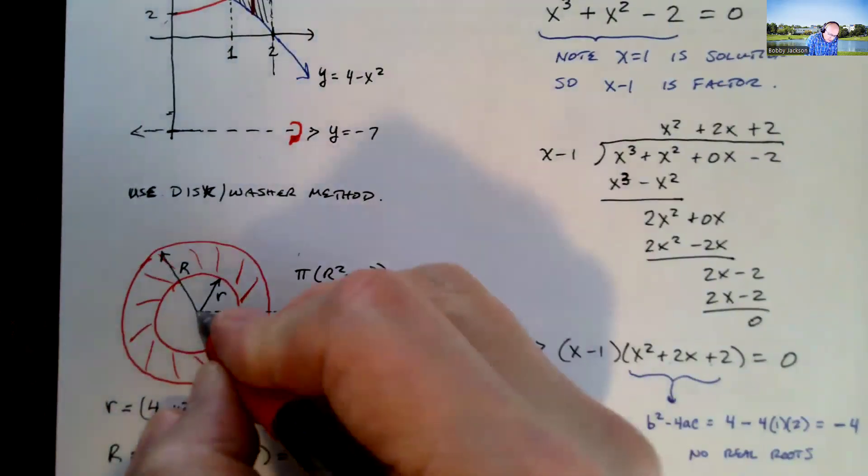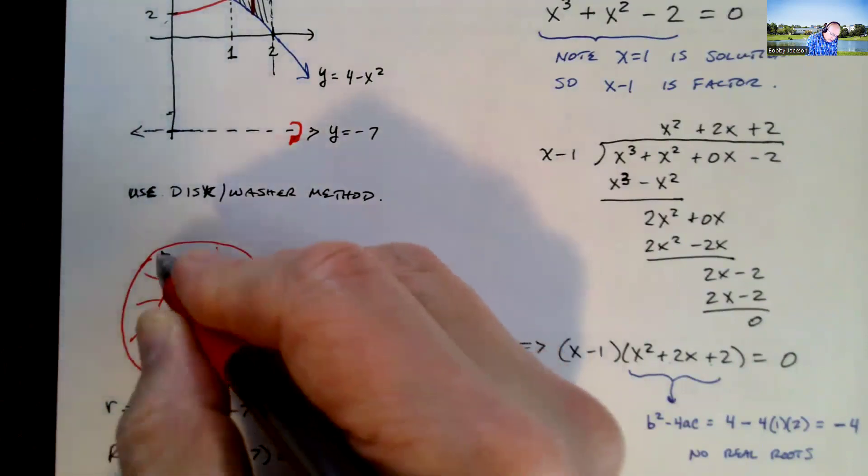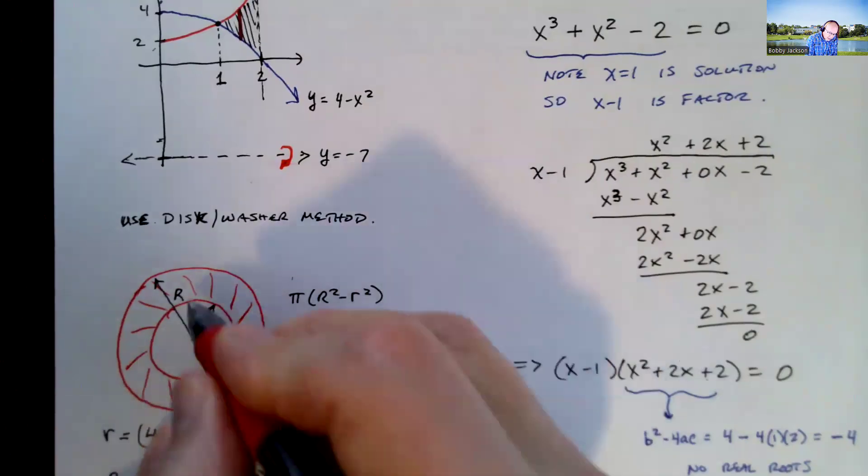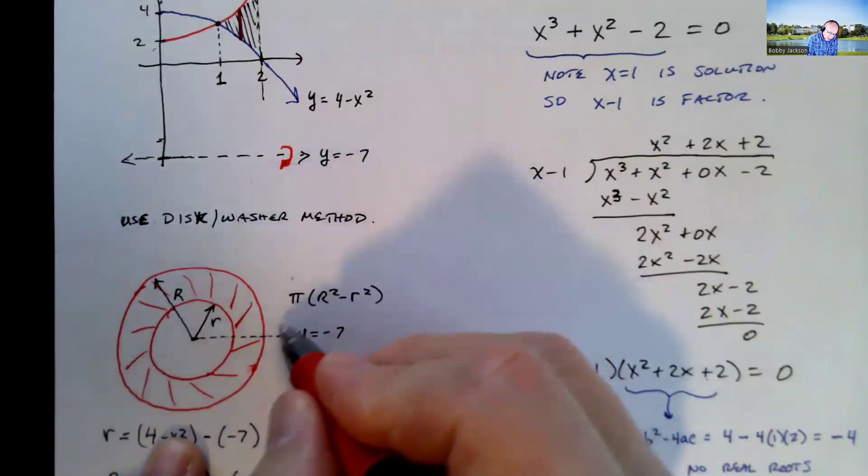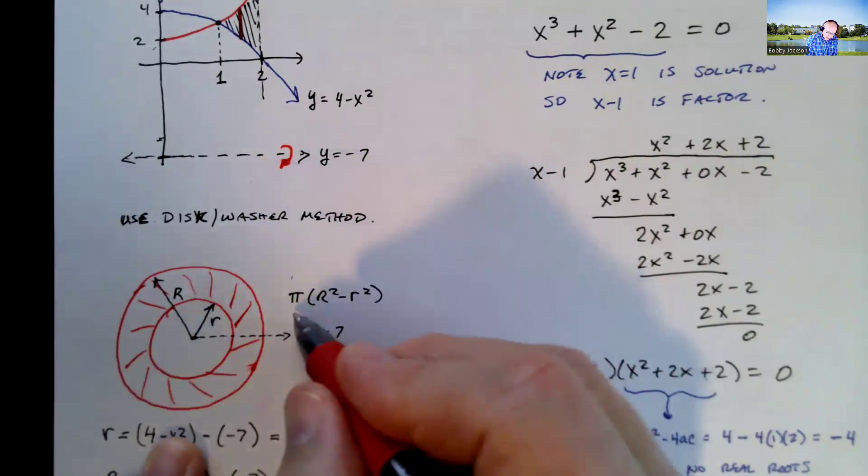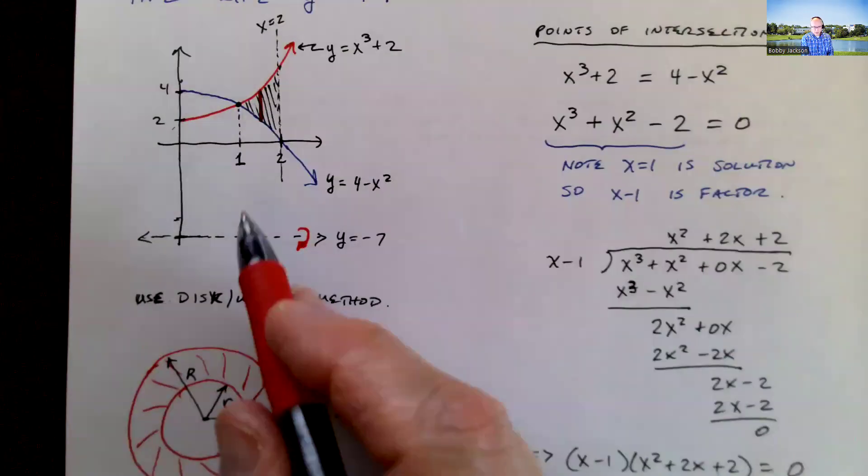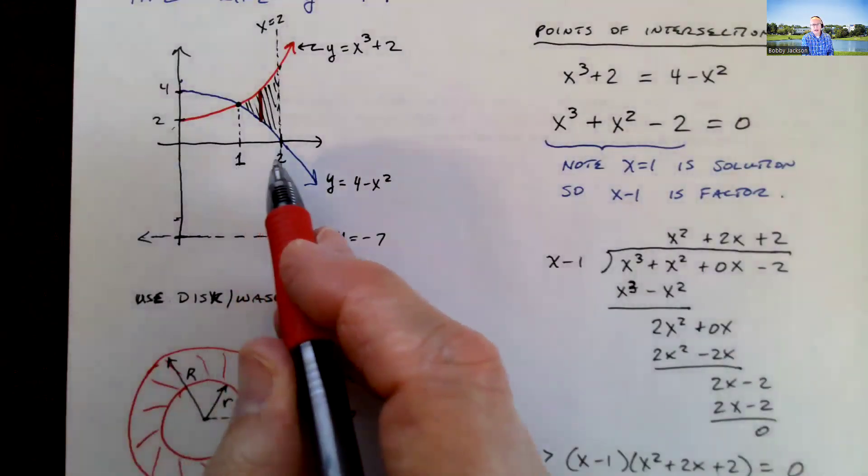And I hope you see that we're going to get washers for our cross-sections. So the way I do this, the inner radius I call little r, the outer radius I call big r, and the area then that I'm looking at is the big circle area minus the little circle area. So factoring out the pi, pi big r squared minus little r squared. So that's our cross-section we're going to integrate from x equal 1 to x equal 2.